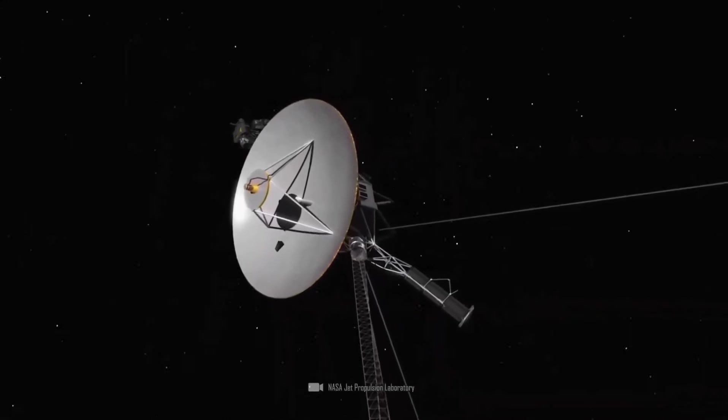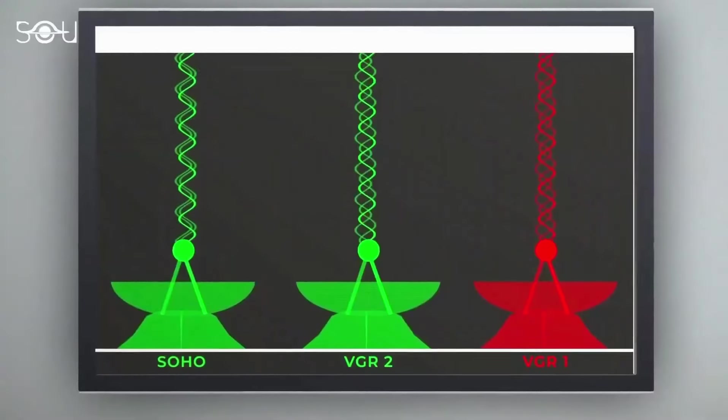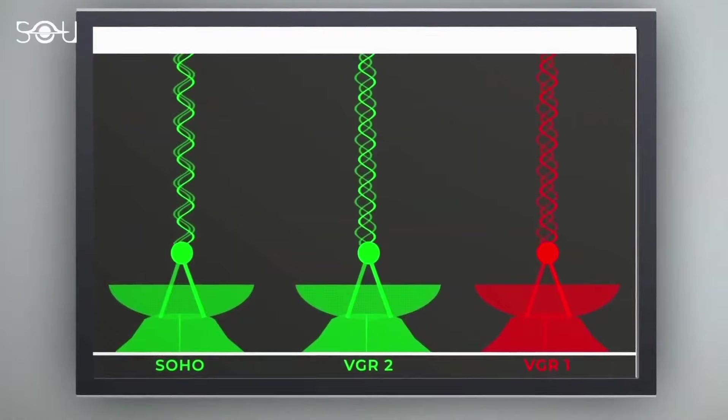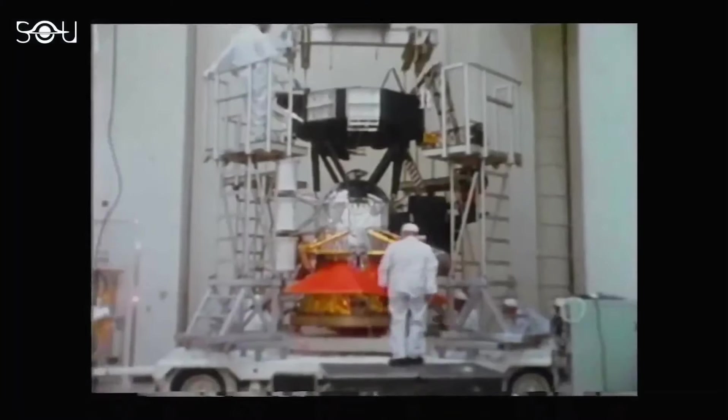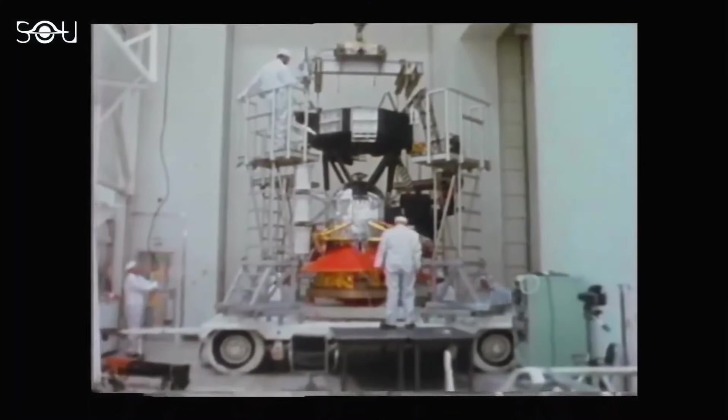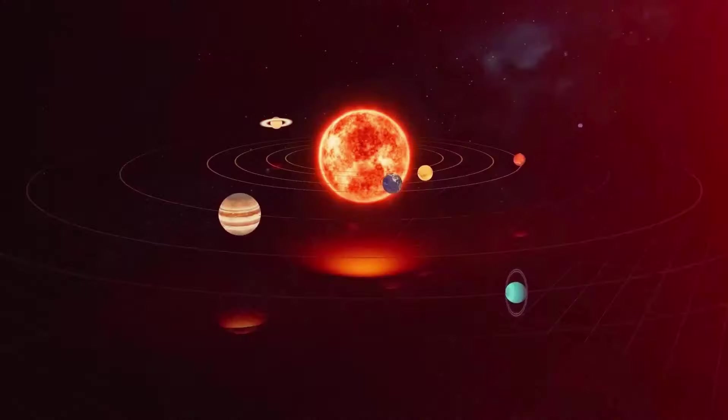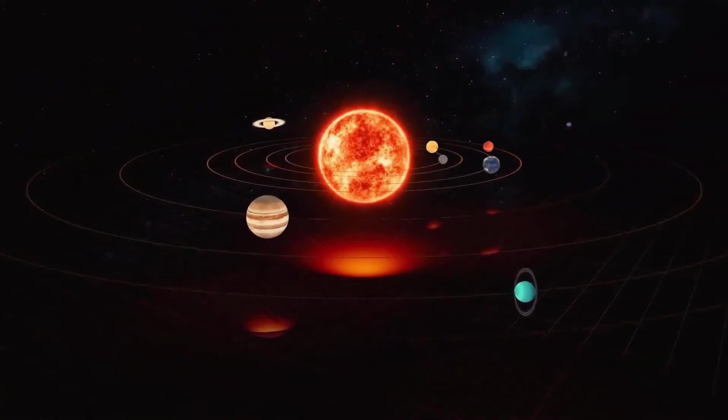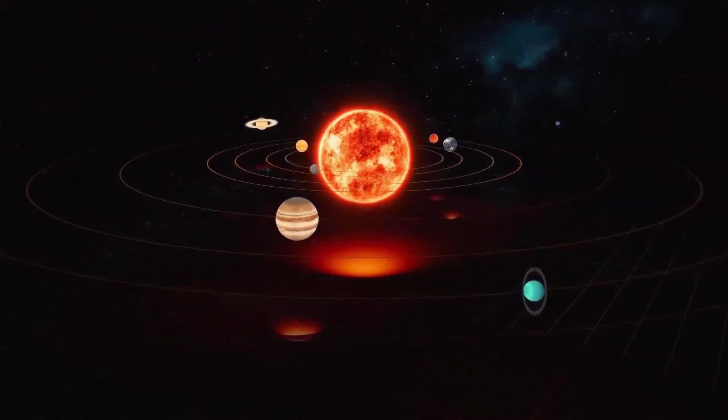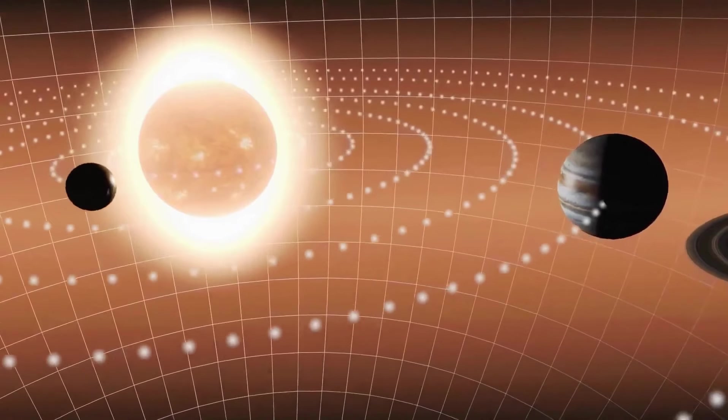In many ways, NASA's twin Voyager spacecraft have evolved into time capsules of their age. They contain around 3 million times less memory than contemporary cell phones, transmit data at a rate about 38,000 times slower than a 5G internet connection, and each one has an 8-track tape recorder for data storage.